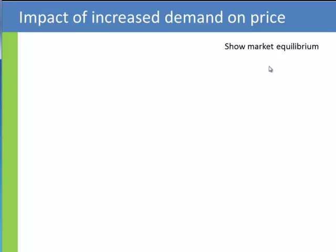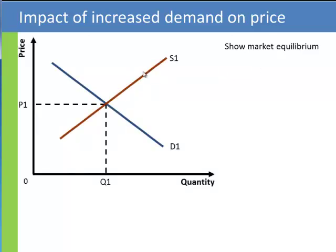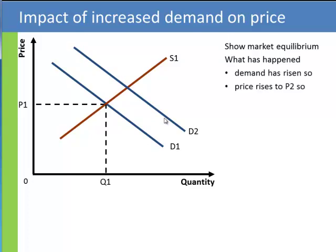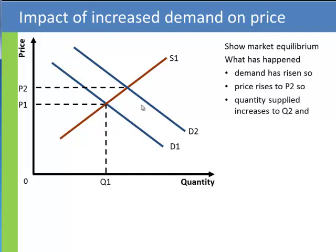Now hopefully you've got something that looks a bit like this. It's your standard supply and demand diagram. Here's your equilibrium market price, because at this price supply equals demand, so you've got Q1 traded. Now what's happened here? The demand curve has shifted out from D1 to D2. Demand's risen. Now because demand's risen, price goes up to P2 — this is where the new level of demand equals supply. Firms respond to that by increasing the quantity supplied to Q2, and this amount extra is traded.